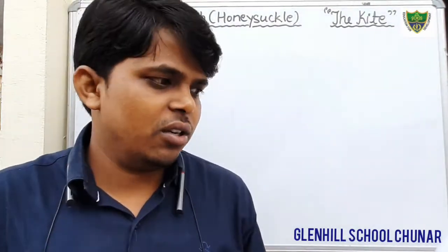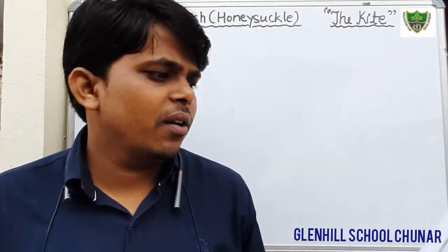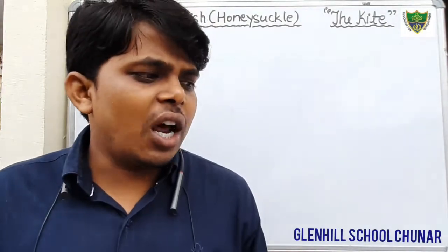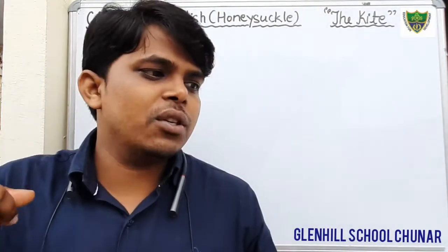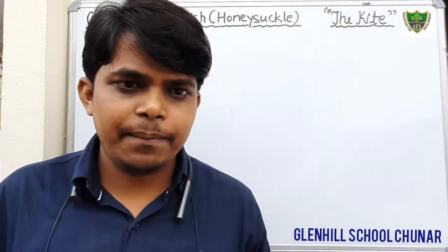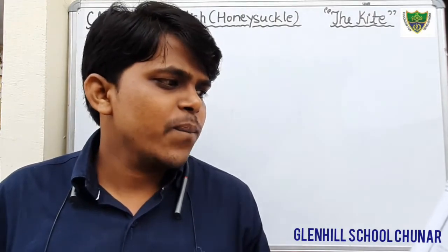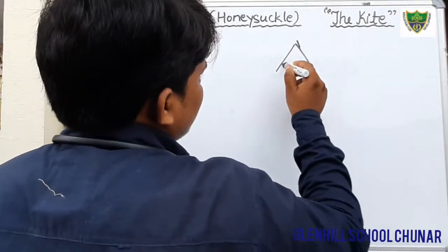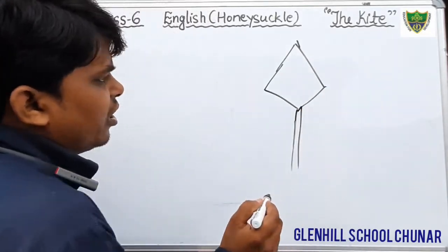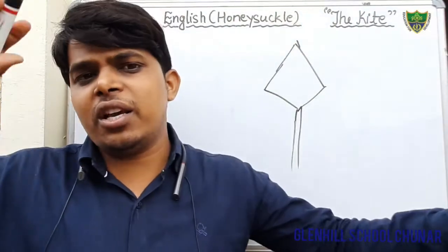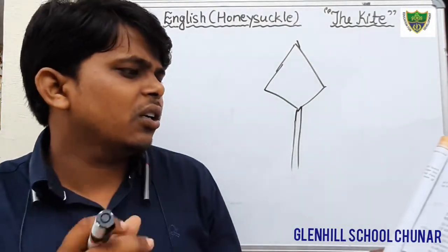With a dive — 'dives' means, in Hindi, we call 'gota lagana.' When the kite flies in the sky, it dives and sometimes dips. And it snaps — 'snaps' means flutter, fluttering. Snaps its tail — generally a kite also has a tail at the bottom. So when it is in the sky, its tail flutters.